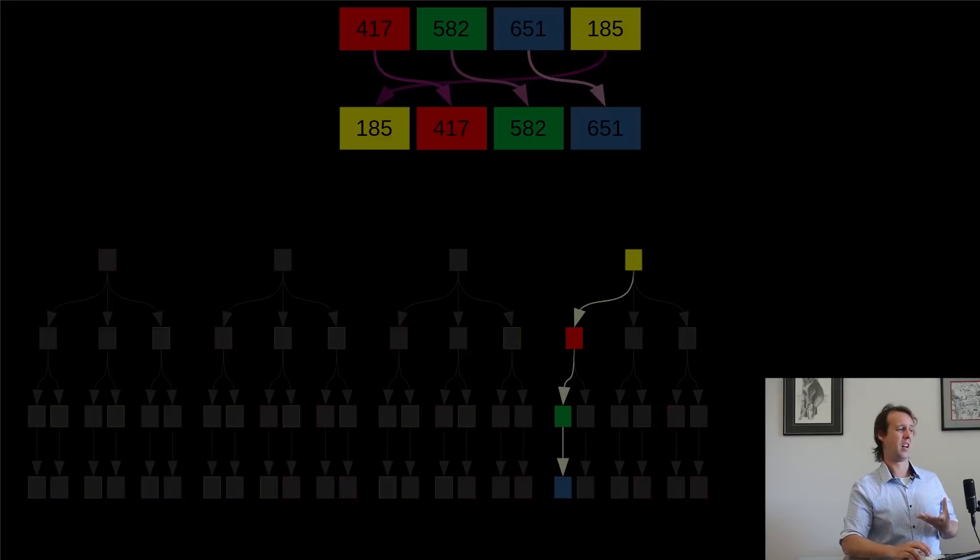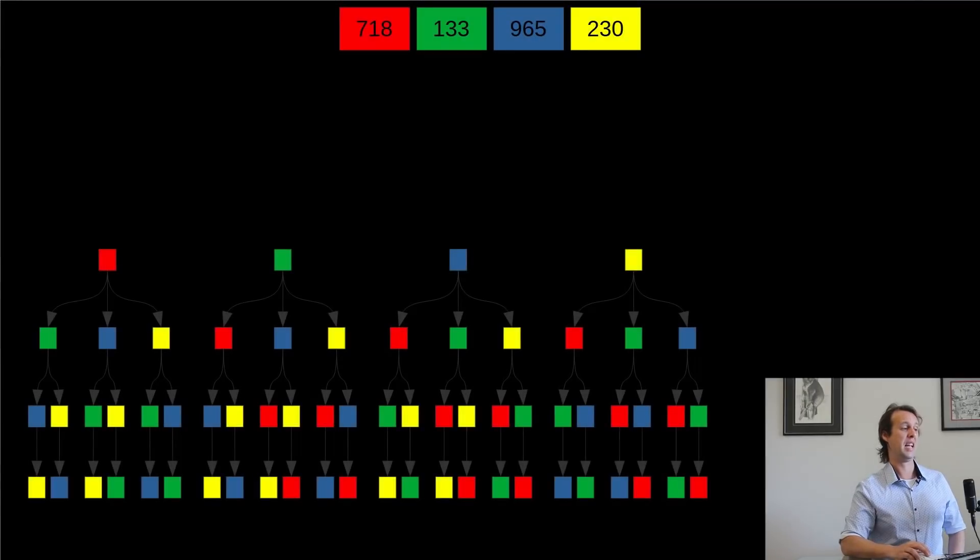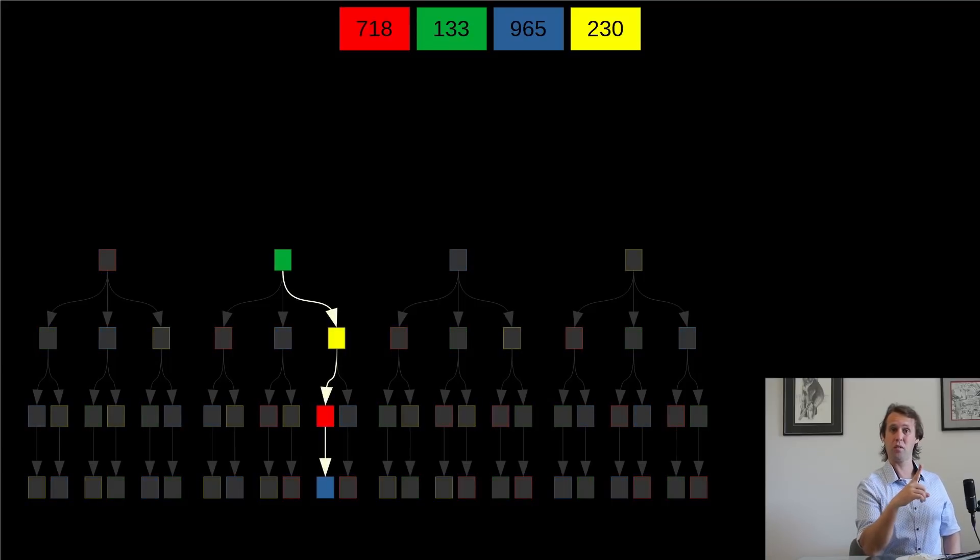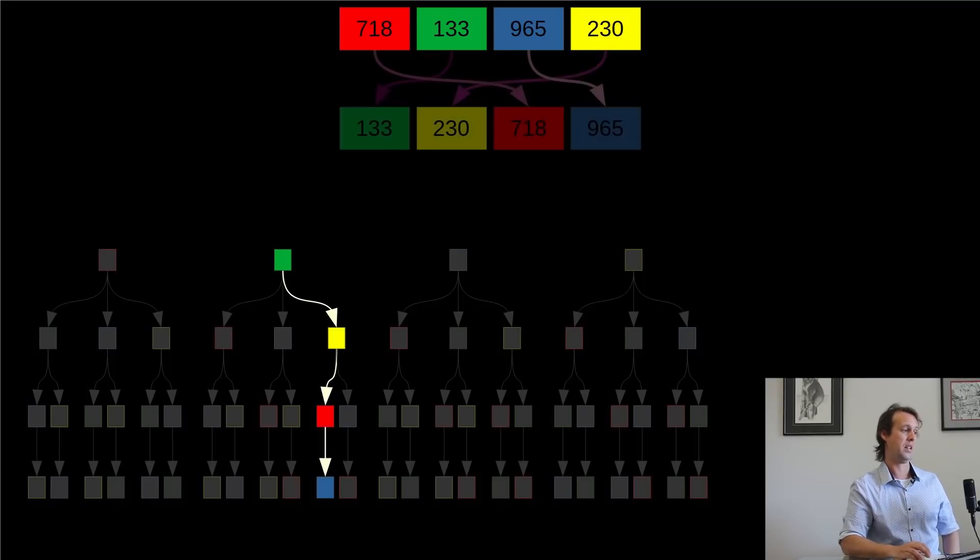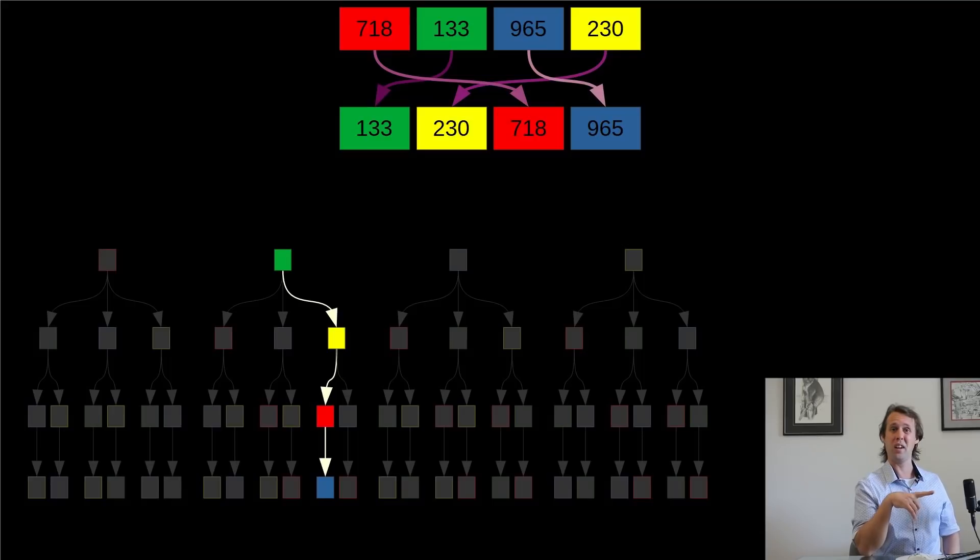So if our boxes had a whole bunch of different numbers, say 718, 133, 965, and 230, then we could have a look at our tree, and once again we could map out the single sorted permutation from our tree. Yeah, so the sorted order for this list would go green, yellow, red, blue. You can just arrange these items in some order, and one of the orders, one of the permutations, is the sorted permutation.